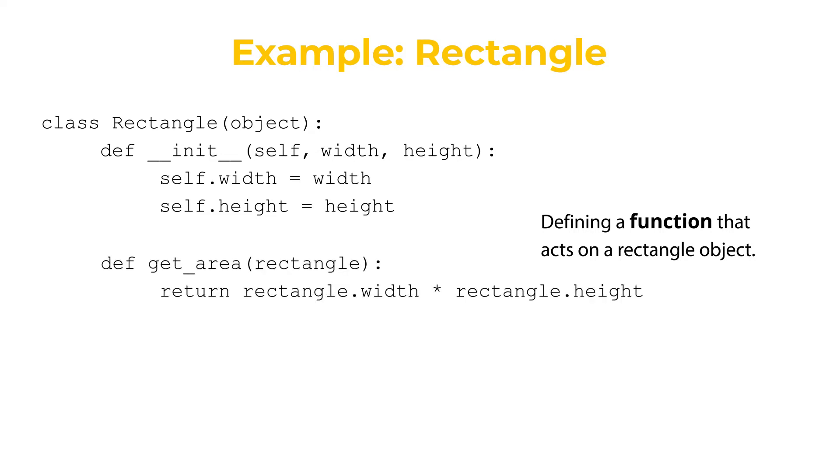One very simple function might be get_area. It takes a rectangle object as input and returns the area of that rectangle. So returns rectangle.width times rectangle.height. Note that this function is not part of the class. It's outside the class definition.